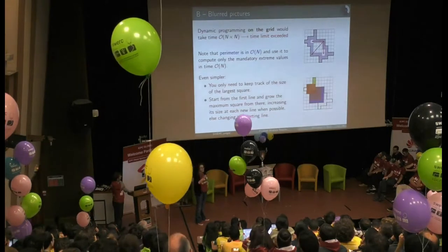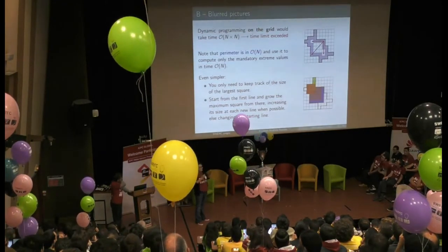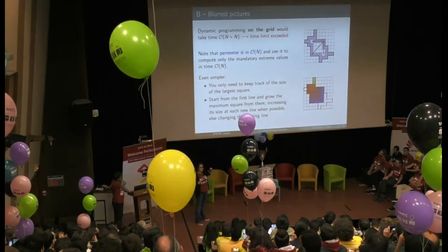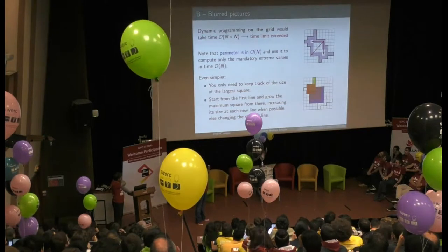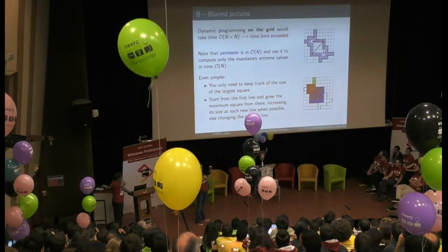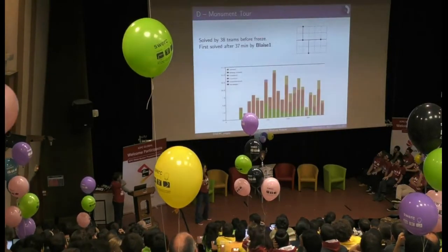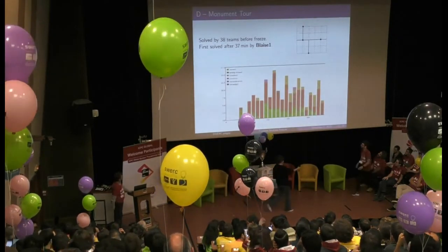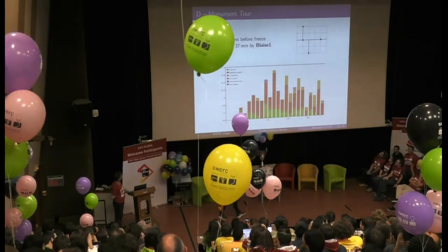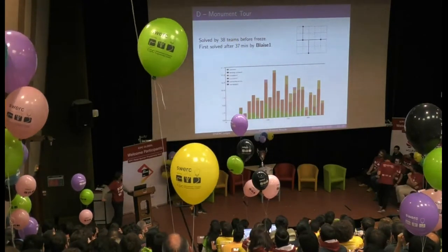There is an even simpler solution: you can grow the largest square starting from the first line, increasing the size of the square each line if possible, or just moving the starting line if not. This problem, along with Rounding, had the most total submissions.